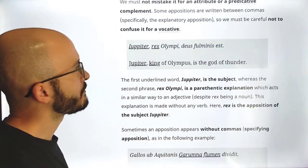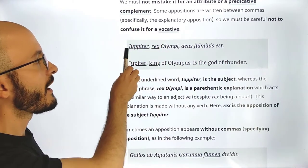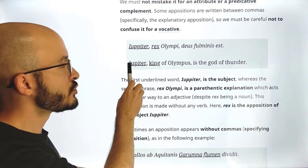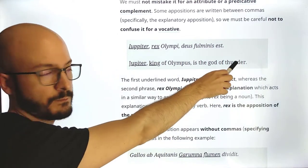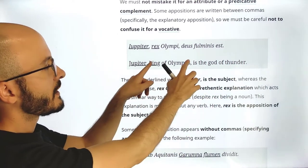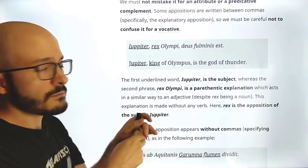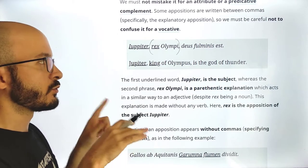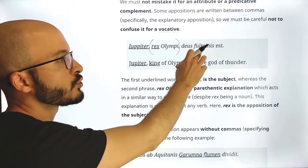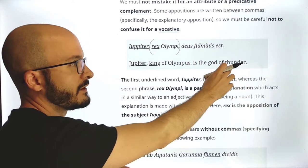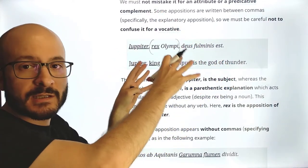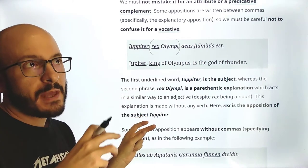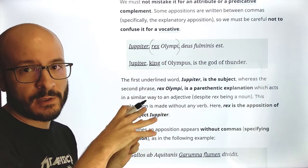Now let's see an example of an actual apposition: 'Jupiter, Rex Olympi, Deus fulminis est,' which we can translate as 'Jupiter, king of Olympus, is the god of thunder.' Here we have this phrase between commas, which means we could totally remove it or write it between parentheses. We could say 'Jupiter Deus fulminis est' — 'Jupiter is the god of thunder' — and the sentence is complete. This is an explanatory apposition because we give extra information which is not necessary, but we give it just because we are explaining, even if it's not needed. Everybody knows that Jupiter is the king of Olympus.